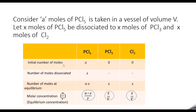For the initial number of moles taken: A moles of PCl5 is taken initially. In the beginning, we do not have PCl3 and Cl2. Then, X moles of PCl5 dissociated, so the number of moles dissociated is equal to X.